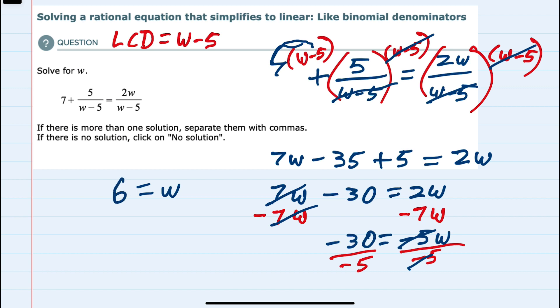And then lastly, to make sure we don't have a situation where there's no solution, if I were to substitute this w equals 6 back in to our equation, does it create a problem where we have a 0 in the denominator? And for these denominators, plugging in a 6 does not give us a 0 in the denominator. So we can say our solution is w equals 6.